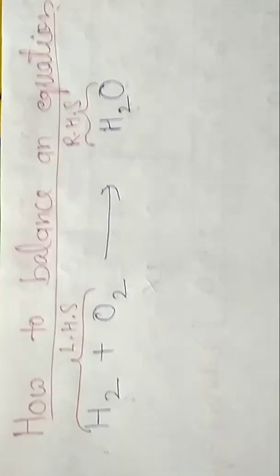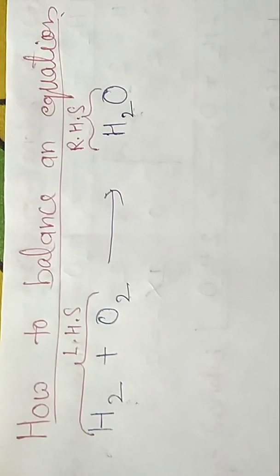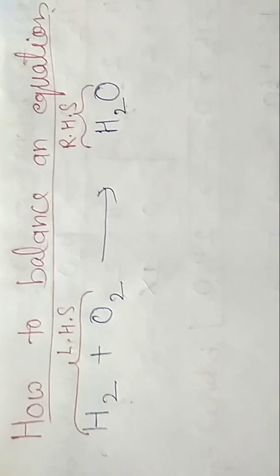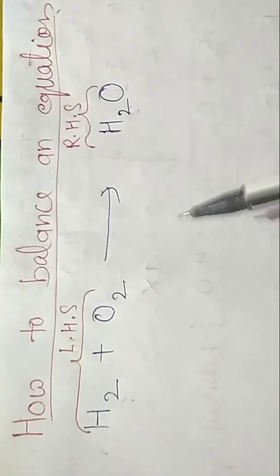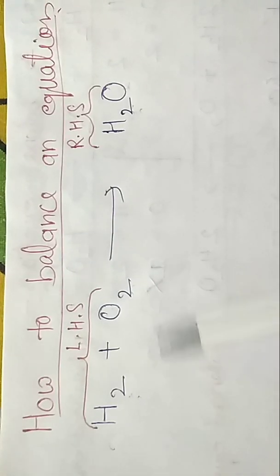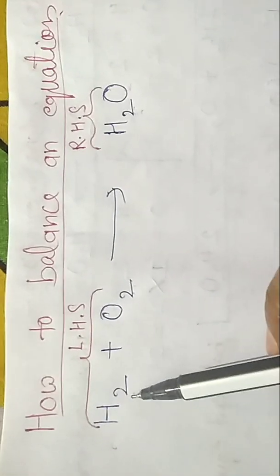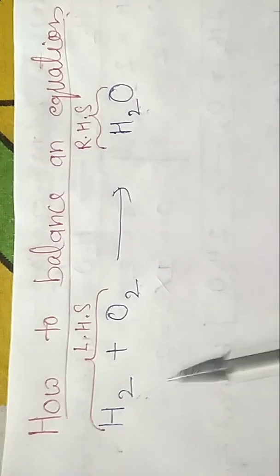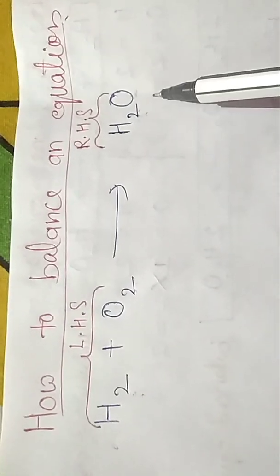Welcome students. In this next video of matter and chemical formula, today we will understand how to balance an equation. Here is a written equation: H2 plus O2 produces H2O. These are reactants and this is the product.